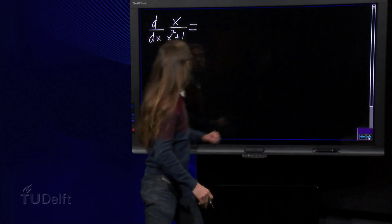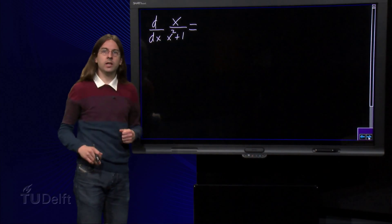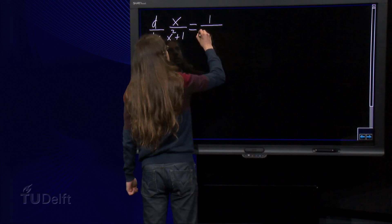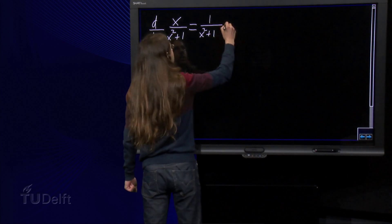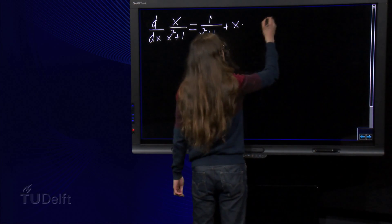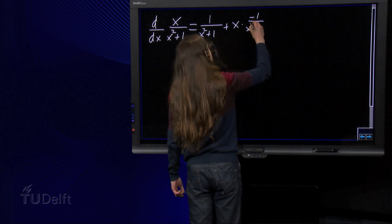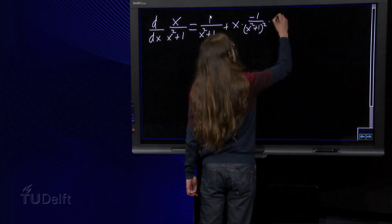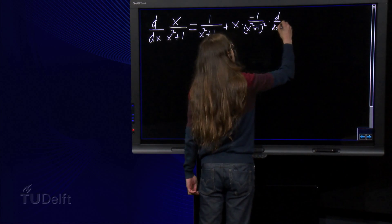For example, the derivative of x over x² plus 1 equals 1 times the derivative of x over x² plus 1 plus x times the derivative of 1 over x² plus 1, which is minus 1 over x² plus 1 squared times the derivative of x² plus 1.